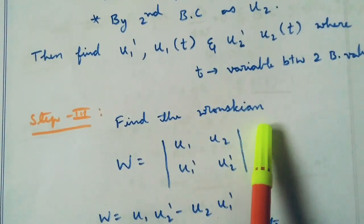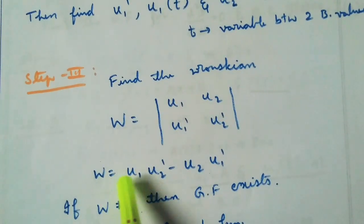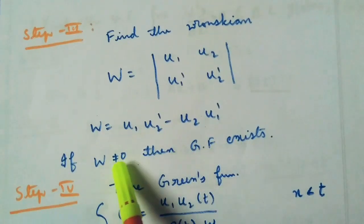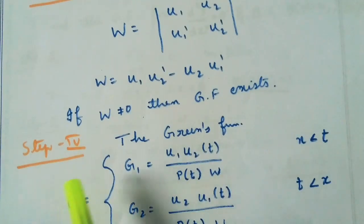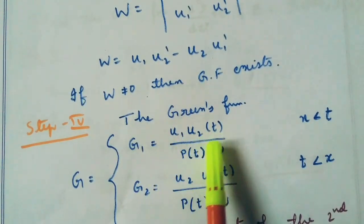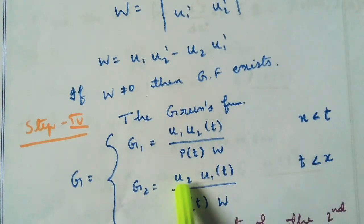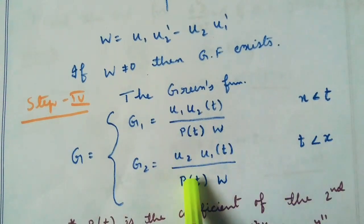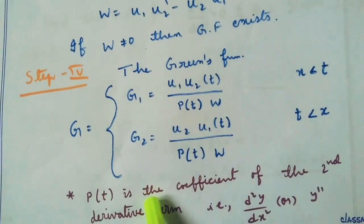Step 3 is to find the Wronskian using u1, u2, u1 dash, u2 dash: W equals u1·u2 dash minus u2·u1 dash. If W is not equal to 0, then Green's function exists. The fourth step is: the Green's function g equals g1 = u1·u2(t) divided by p(t)·W for x less than t, and g2 = u2·u1(t) divided by p(t)·W for t less than x. Here p(t) is the coefficient of the second derivative term.